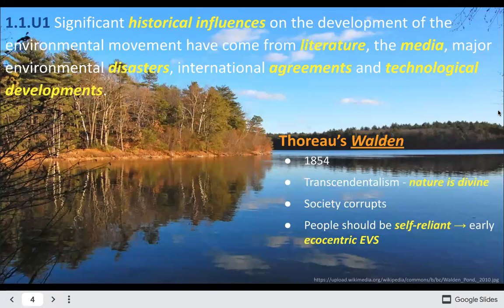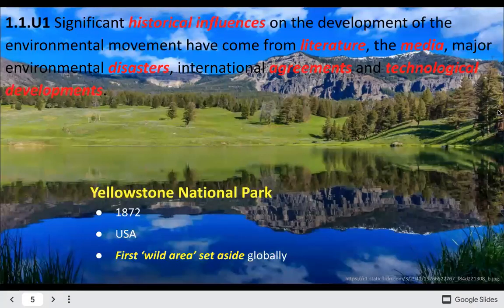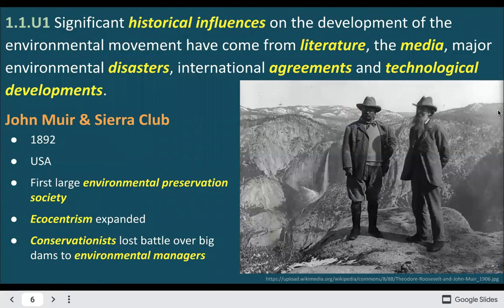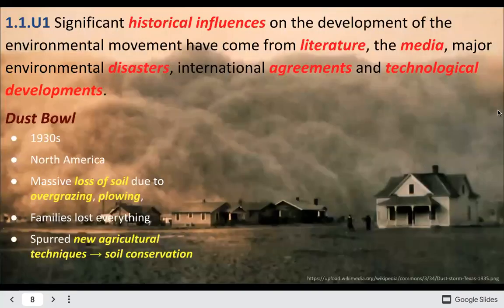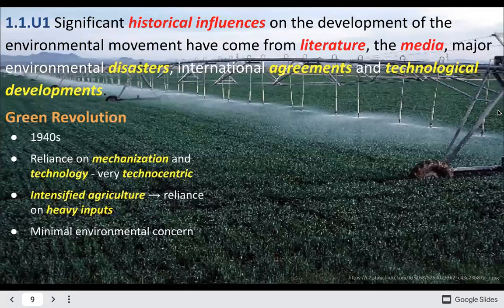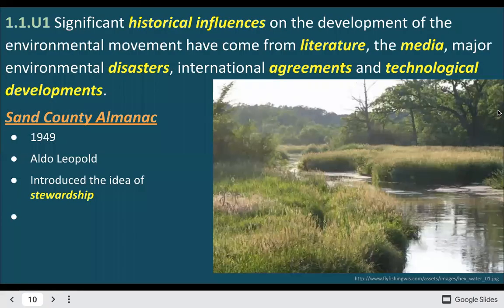Some historical influences — there's a wide range of these. You should have each picked your own at the beginning of the year to do a little bit of research on. This is a non-complete list of events that impacted the environmental movement, from the founding of the National Park and figures like John Muir and the Sierra Club, which still exists today, to extinction events like the passenger pigeon and the dodo. You can pause this to see more details.